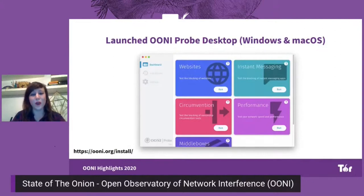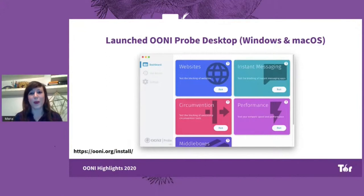Through the new OONI Probe desktop app, you can measure the blocking of websites, you can measure the blocking of popular instant messaging apps like WhatsApp, Facebook Messenger, and Telegram. You can measure the speed and performance of your network, and you can run a number of other different types of tests to measure different forms of network interference.